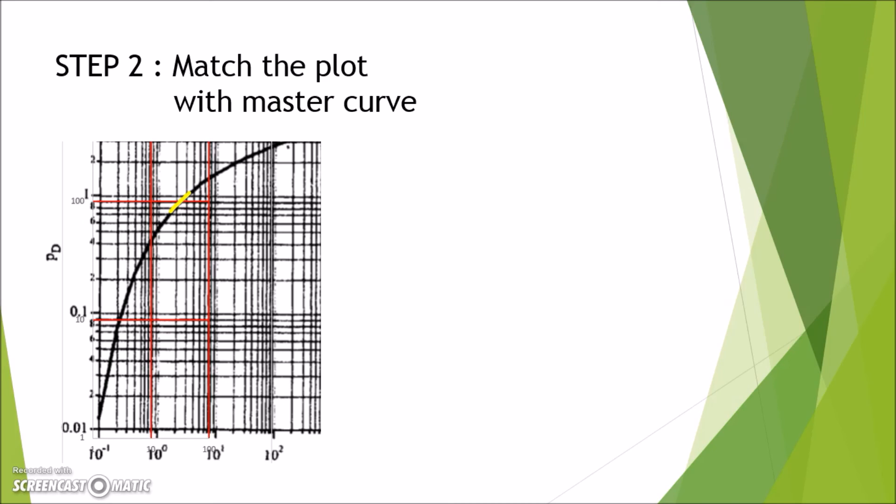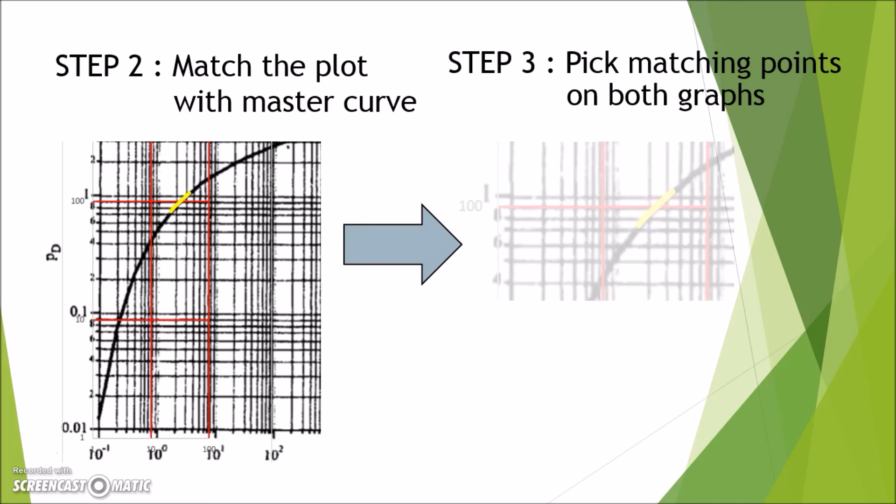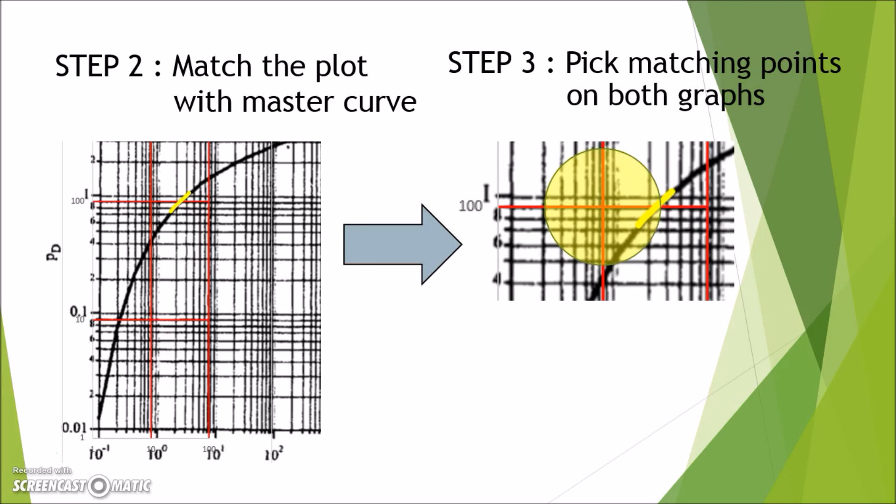Now that we align the graph accordingly, we can proceed to step three, picking the matching points from both graphs. Here in this example, I picked the intersection points from the graph that I plotted, which falls on the yellow circle. As we can see from the match, we obtain the following values. This values might not be exactly the same as from the original match, but it is good enough. So, from the matching points, we get delta p equal to 100 psi, and pd equal to 0.92, while t is equal to 10 hours, and td over rd square is 0.85. We take these points and proceed to step four, which is calculating the permeability and porosity.